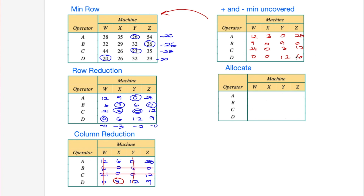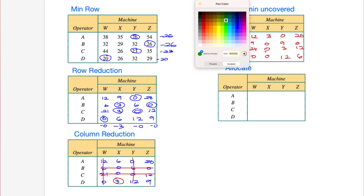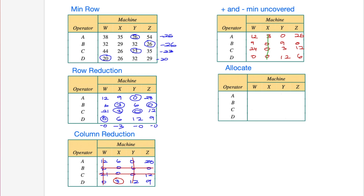Switching colors to green: trying to cover all the zeros now, we've got three zeros in one area, then cover here, a couple more zeros there. We're able to cover all the zeros, and the minimum number of lines is still four. That tells us we're ready to allocate - and technically we were already ready to allocate at the earlier stage too. So getting rid of the lines, we now allocate based on the zeros.